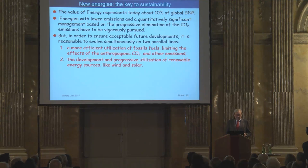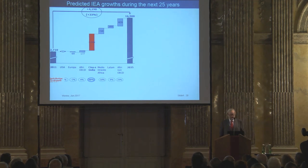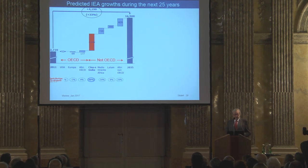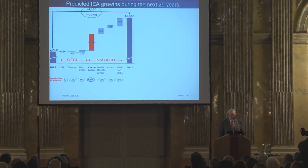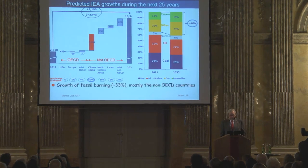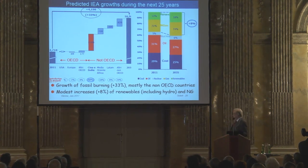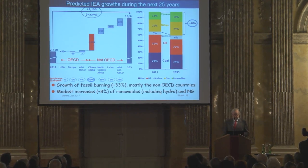However, the predictions of the International Energy Agency are not very successful. A graph shows energy growth over the last 25 years: OECD countries are mostly flat, with a major increase in China and the Orient, leading to an increase of about 30% in total energy produced. The amount of energy growth is mostly due to fossil burning, with only a very modest increase of renewables including hydro and natural gas. This is a 'business as usual' situation, which is certainly not a promise for the future.